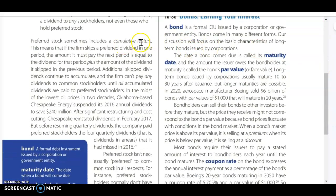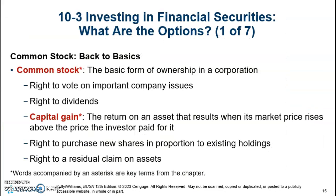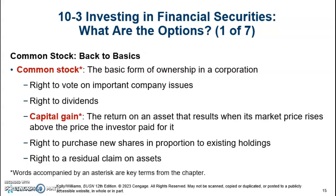In accounting, we talk about a cumulative feature for preferred stock. Let's say you're supposed to get $10,000 and the company only issues $3,000 this year — if it's cumulative, it still owes $7,000. That amount accumulates, and when the company is able to pay it, preferred stockholders must receive that before common stockholders get anything. So it's like a running tab. All of this is covered in the PowerPoint.